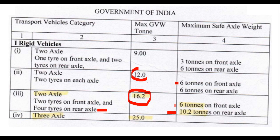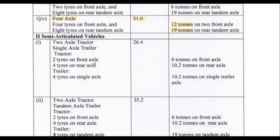For three axles, there are two tires on the front axle (6 tons) and eight tires on the rear tandem axle. The tandem axle can carry a safe load of 19 tons, making the total 25 tons. For four axles it can be 31 tons, and semi-articulated vehicles can be 26.4, 30.52, or higher depending on wheel configuration.